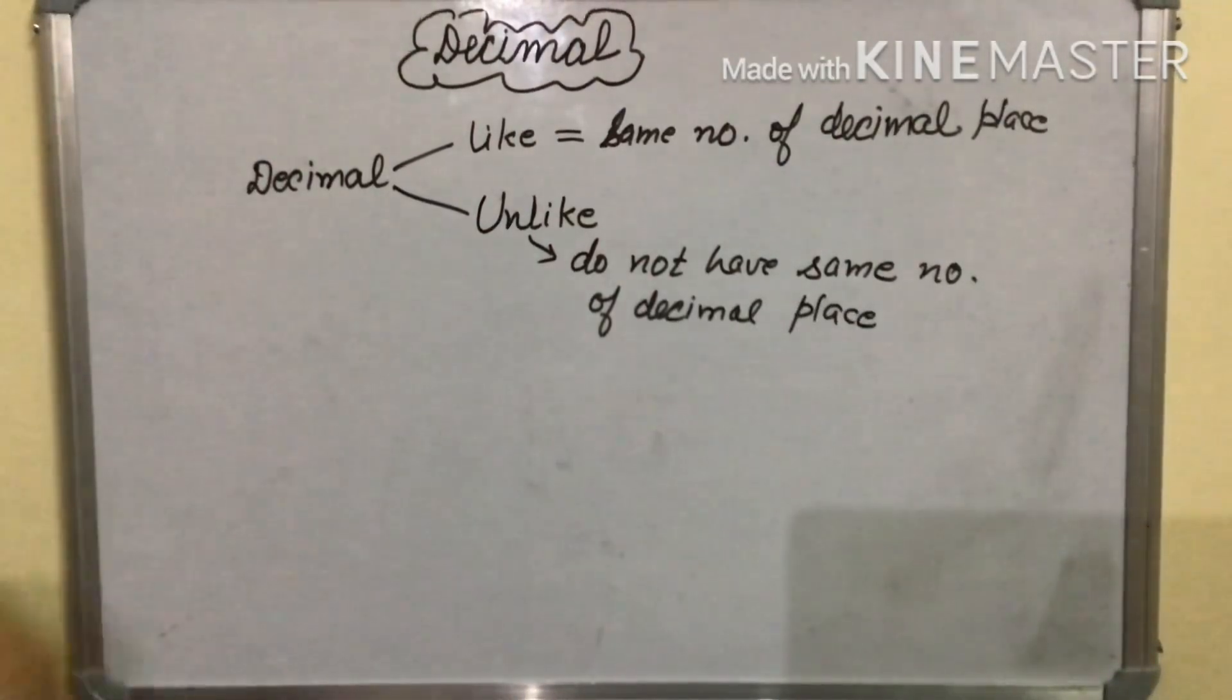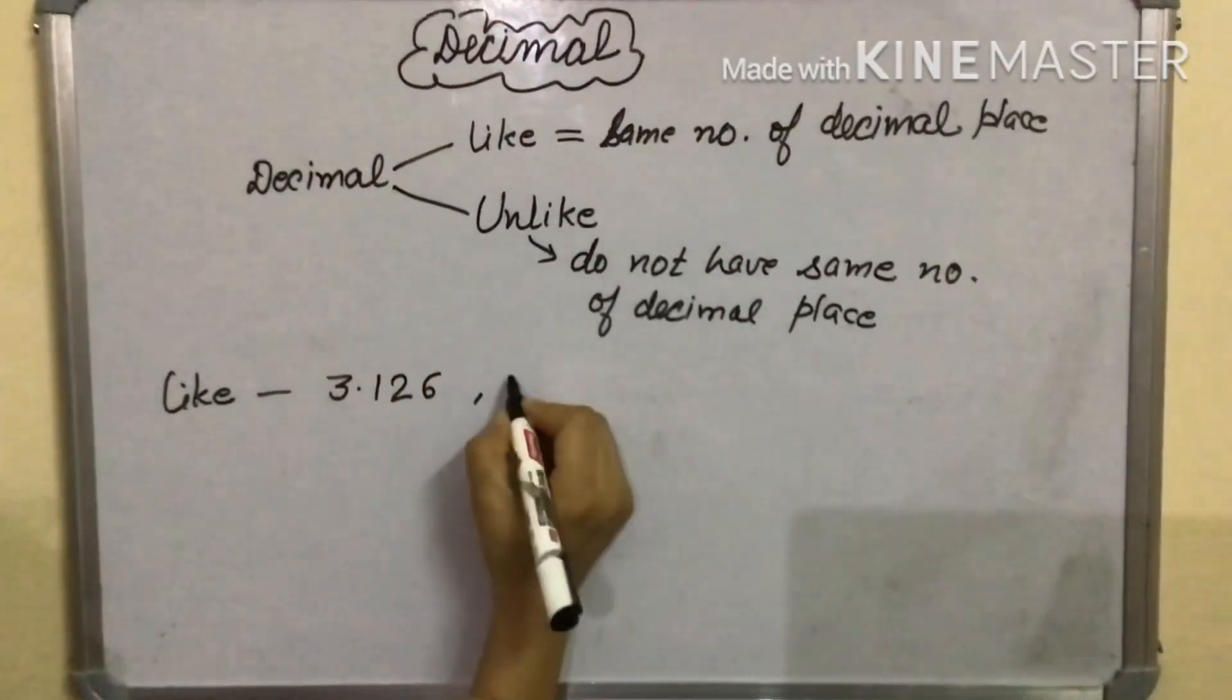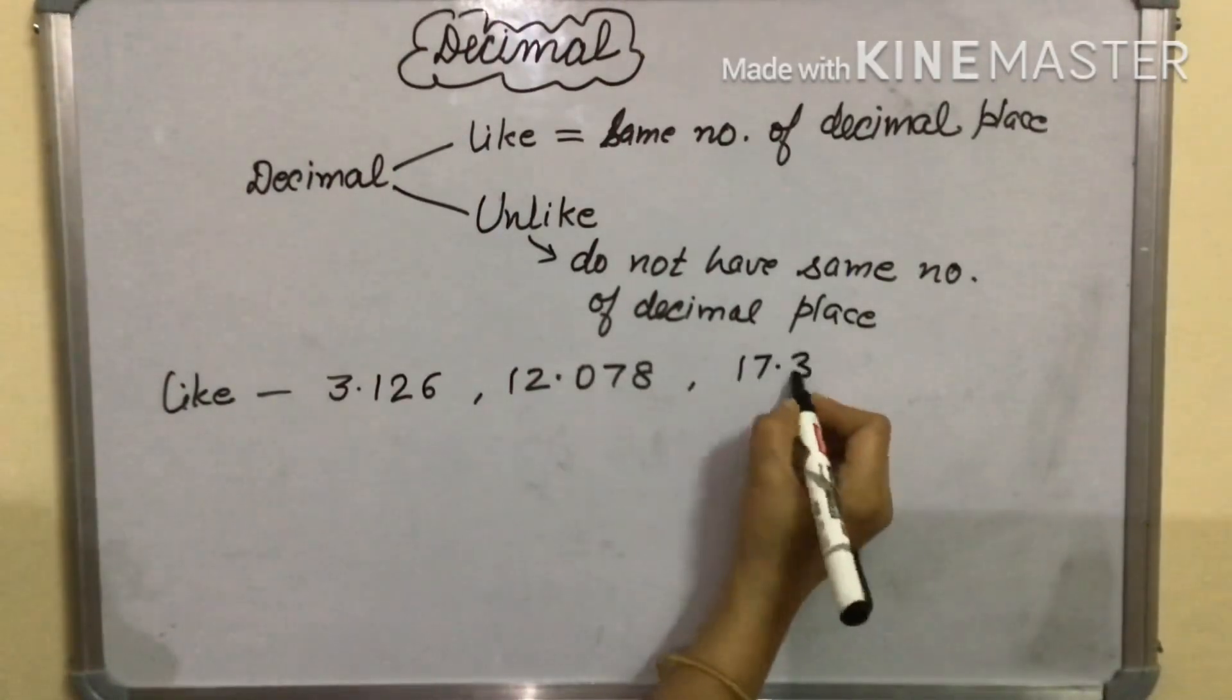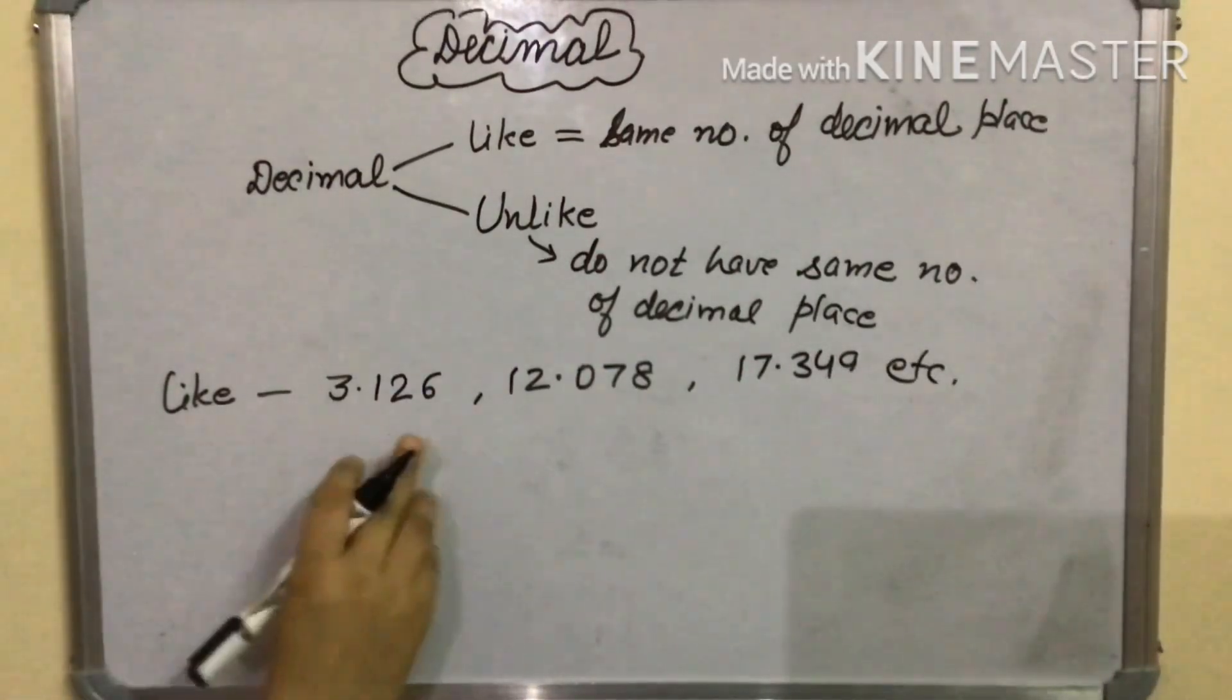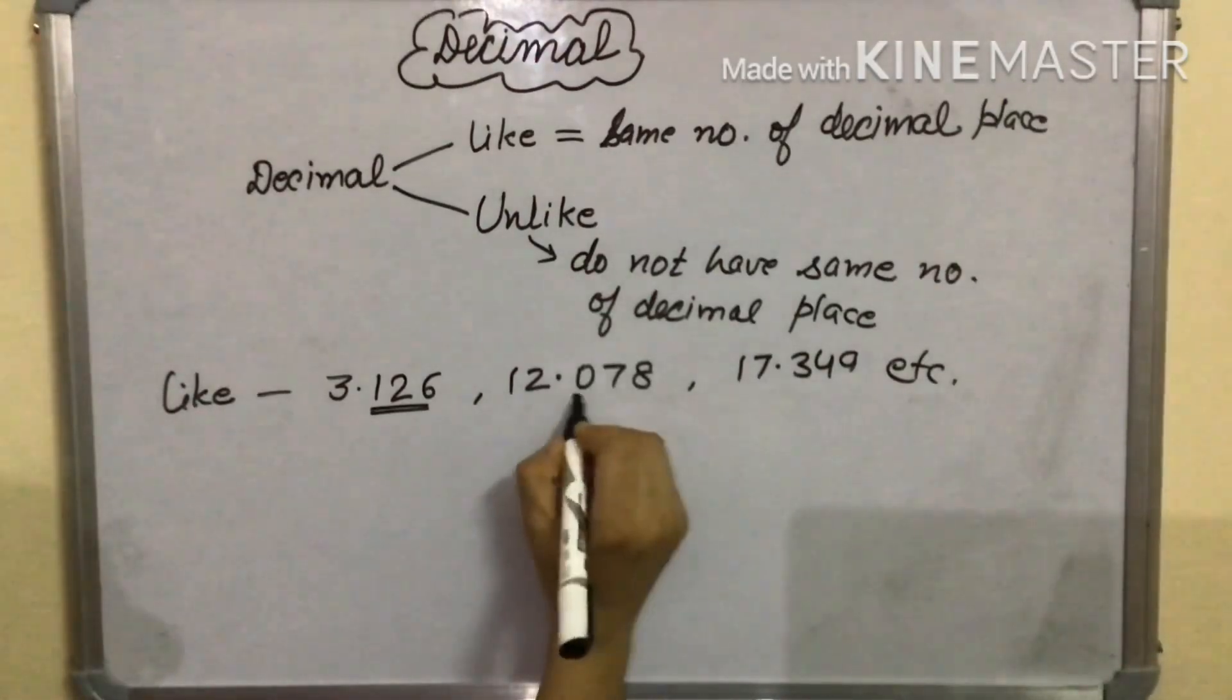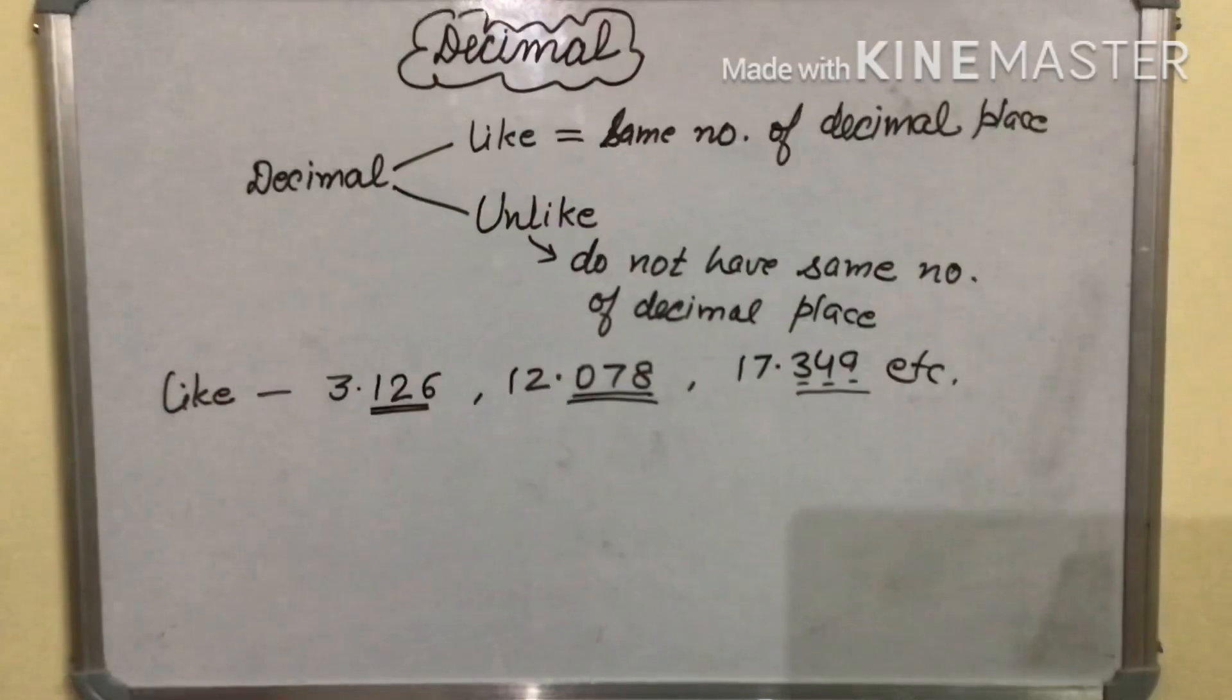Some examples of like decimal are 3.126, 12.078, 17.349 etc. These are like decimals because all of these have same number of decimal places. This number has 3 decimal places and this number also has 3 decimal places and this also has 3 decimal places.